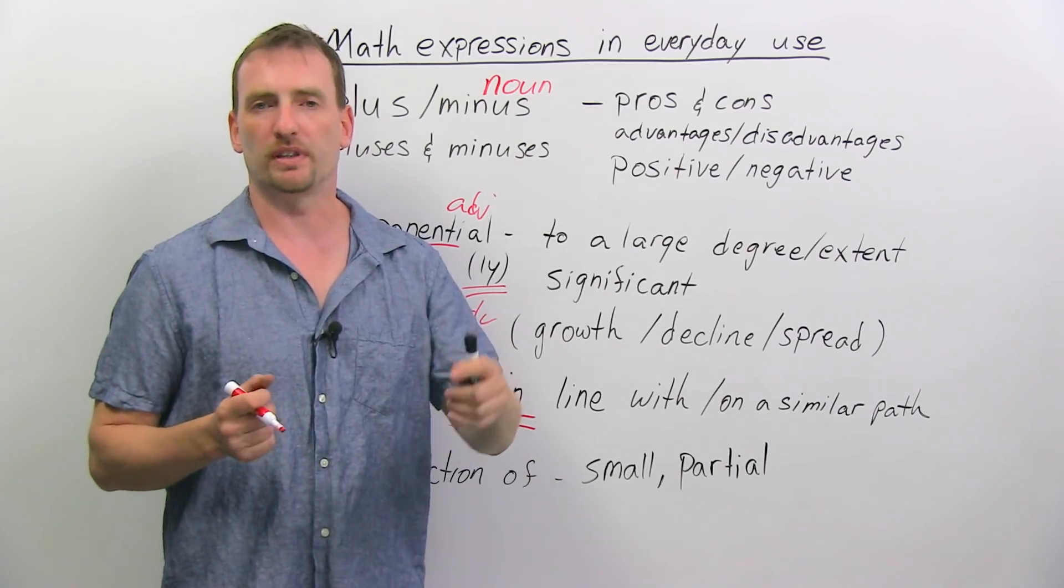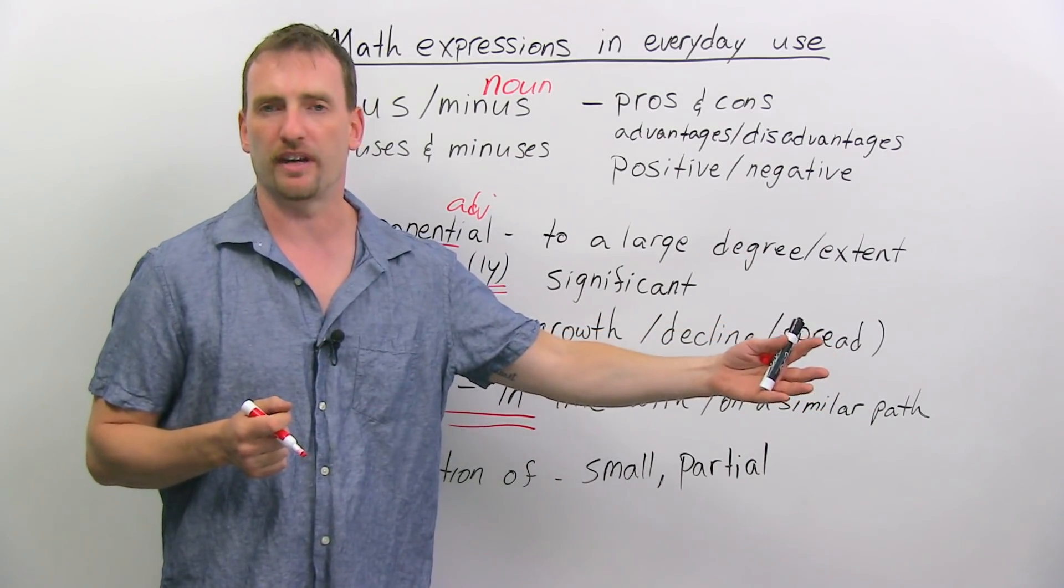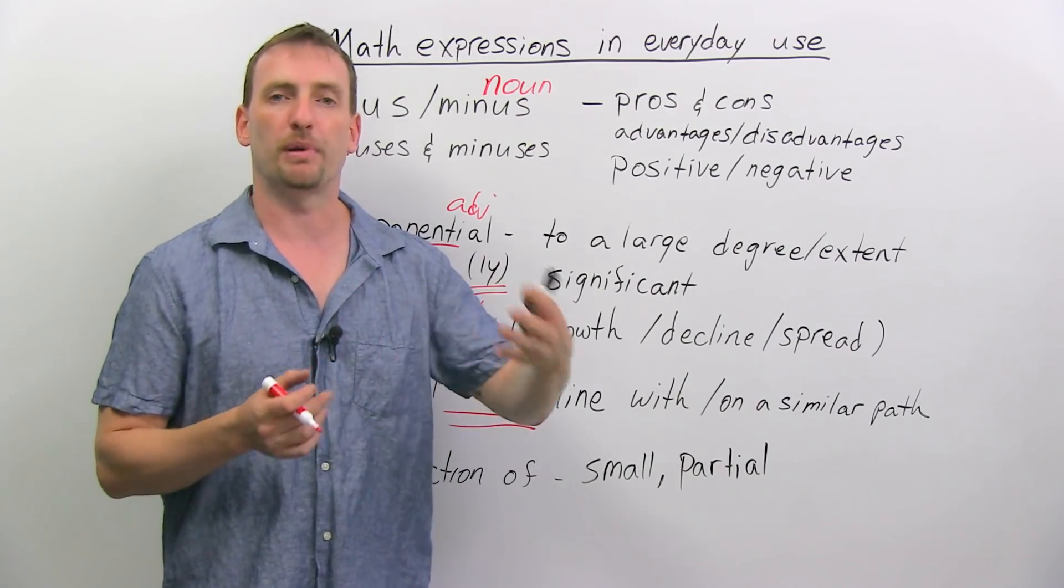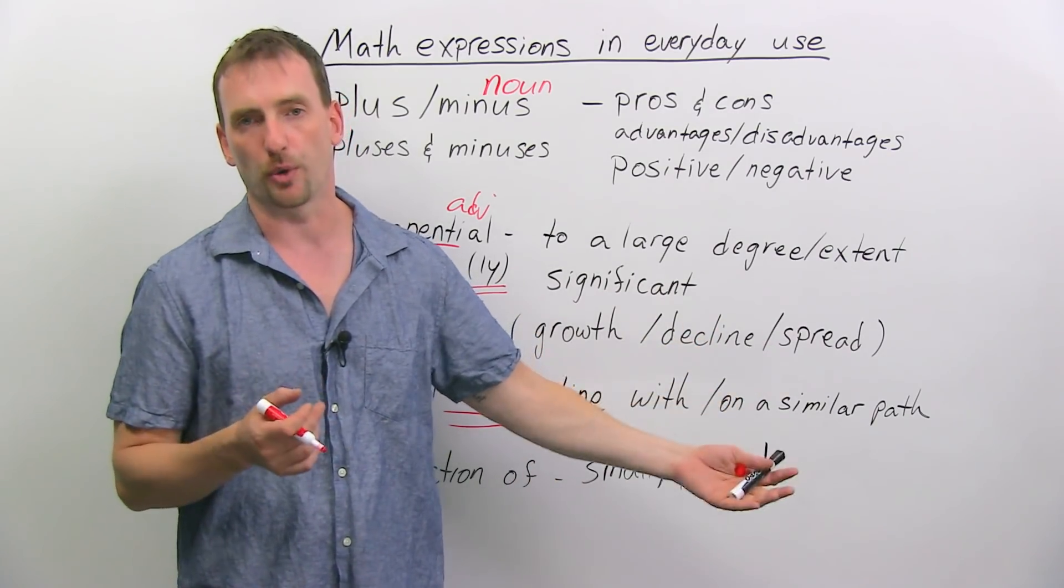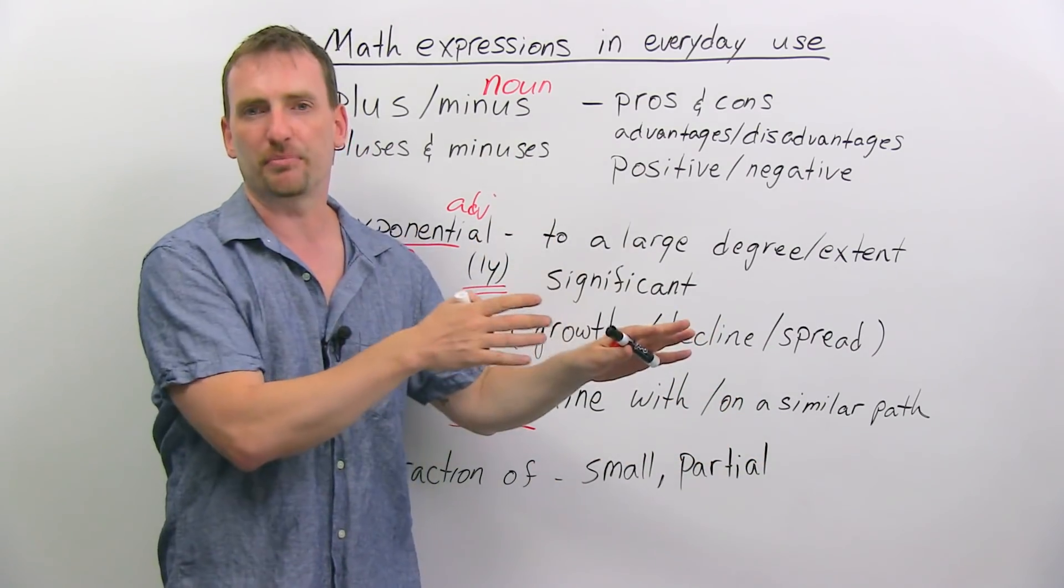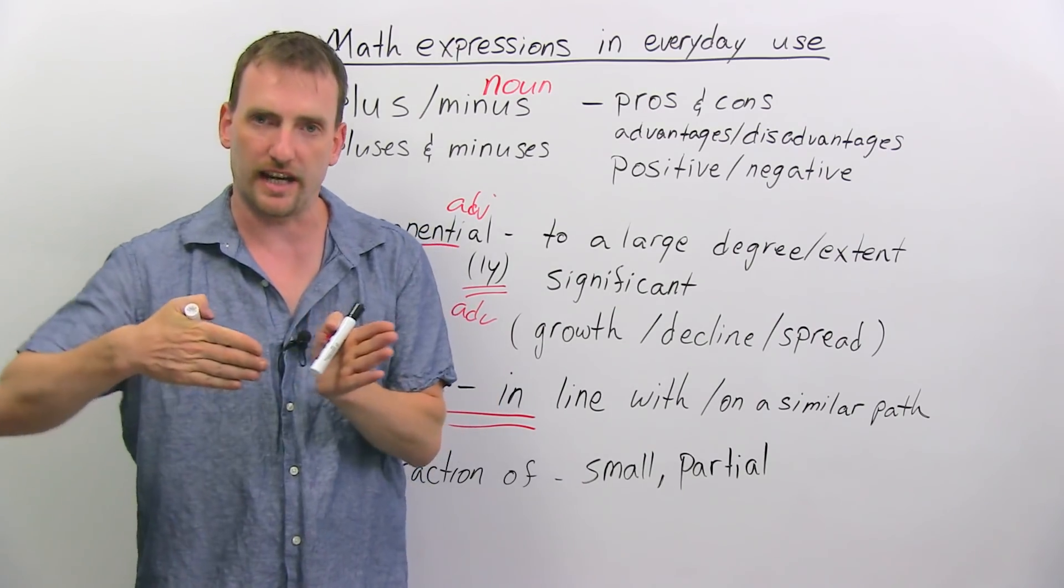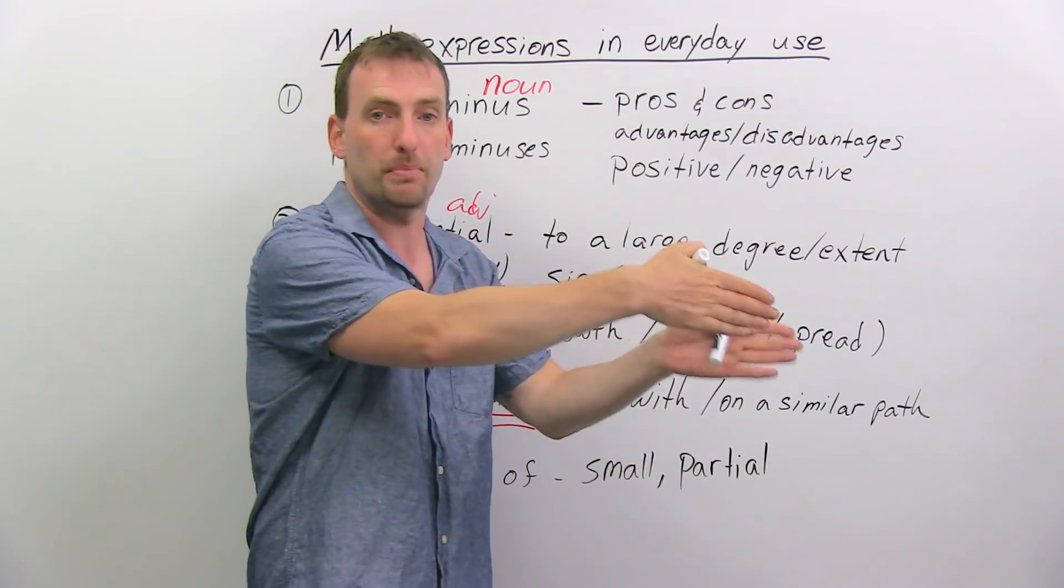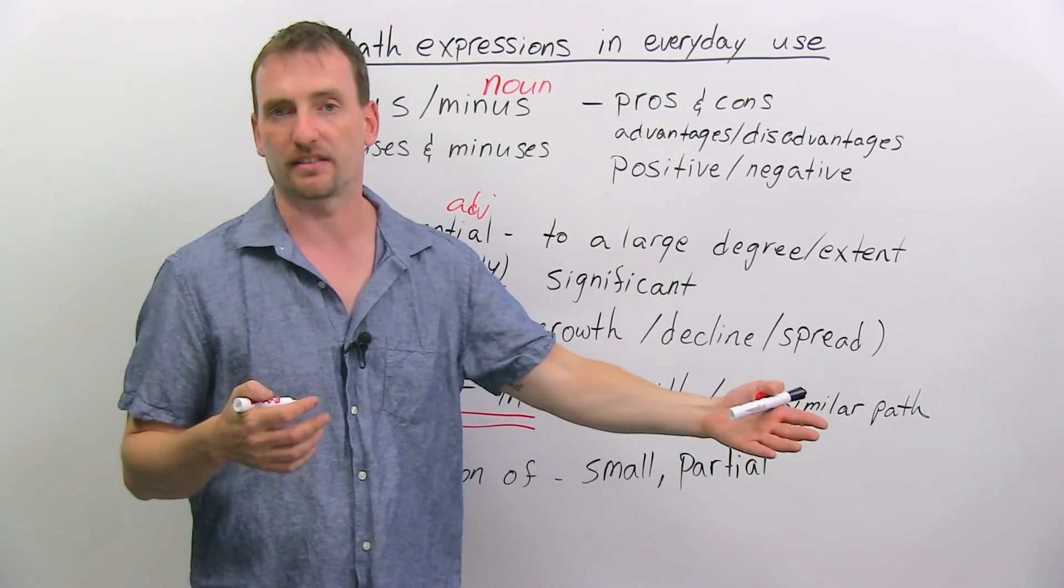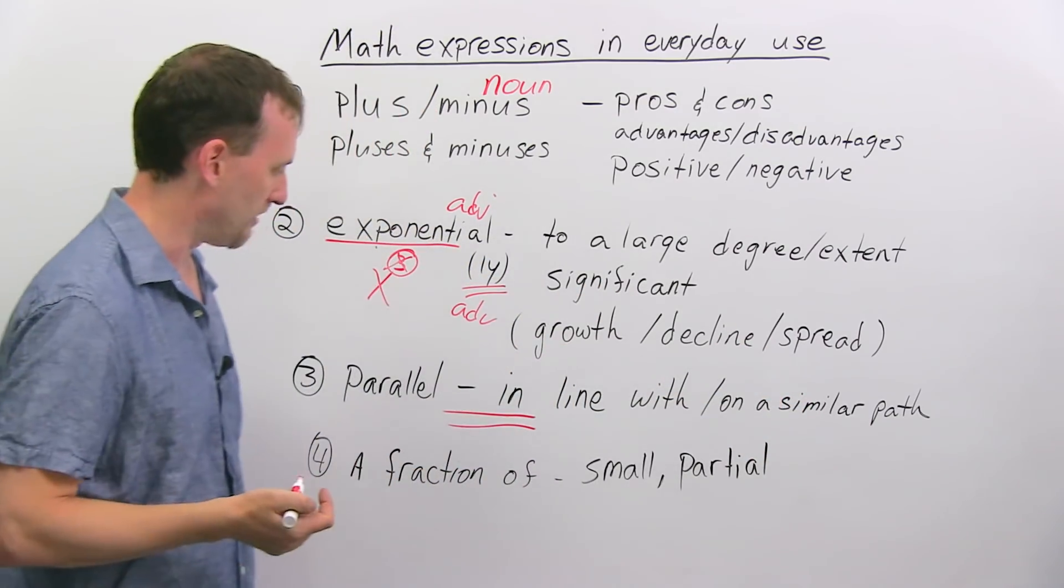So the FBI is conducting an investigation into the events, but the local police department, although they're going to cooperate with the FBI, are going to run a parallel investigation on their own. So they're going to help the FBI, but they're also going to have their own investigation that's going to go along the same path, a parallel investigation, meaning in the same direction.